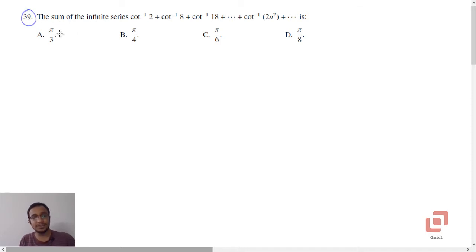This is the second question from sequences and series. The very first question was also on sequences. This question says the sum of the infinite series cot inverse of 2 plus cot inverse of 8 plus cot inverse of 18 and so on plus cot inverse of 2n squared. They have also given us a general term plus and so on: pi by 3, pi by 4, pi by 6, and pi by 8.